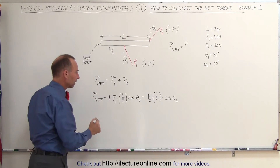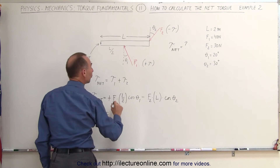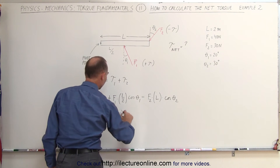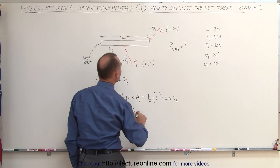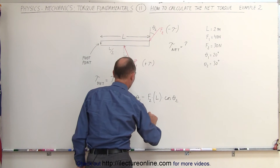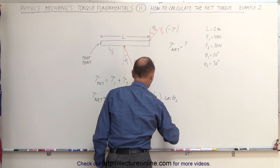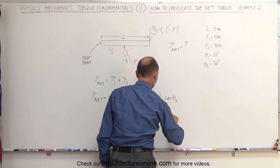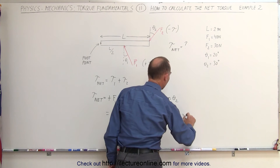All we have to do now is plug in the numbers. We get F1, which is 40 newtons, times the length of the beam — 2 meters divided by 2 — times the cosine of theta 1, which is the cosine of 20 degrees. Minus F2, which is 30 newtons, times the length of the beam, which is 2 meters, times the cosine of the angle, which in this case is 30 degrees.